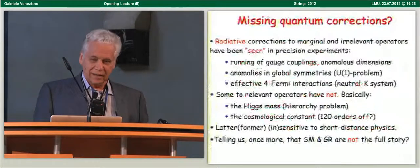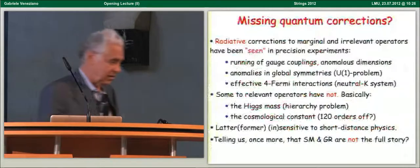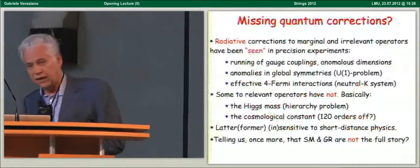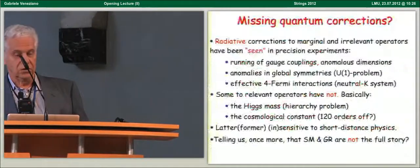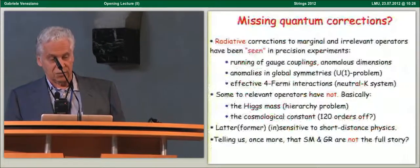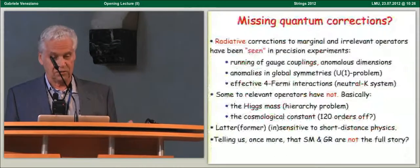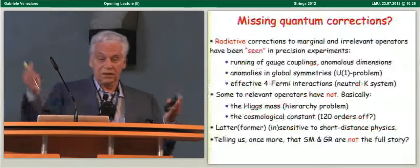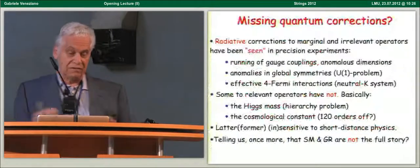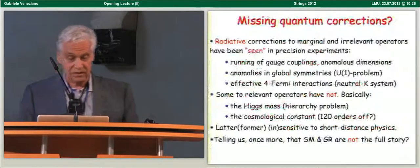I want rather to emphasize what strikes me as missing quantum corrections. As I said, radiative corrections have been seen, are very important in getting precision tests of the standard model. However, they have been seen, quote unquote, in marginal and irrelevant operators. For instance, the running of gauge couplings has been seen. Anomalous dimensions have been seen. Anomalies in global symmetry solving, for instance, the U(1) problem have been seen. You have seen effective four Fermi interactions coming from boxes and so on, the neutral K system.